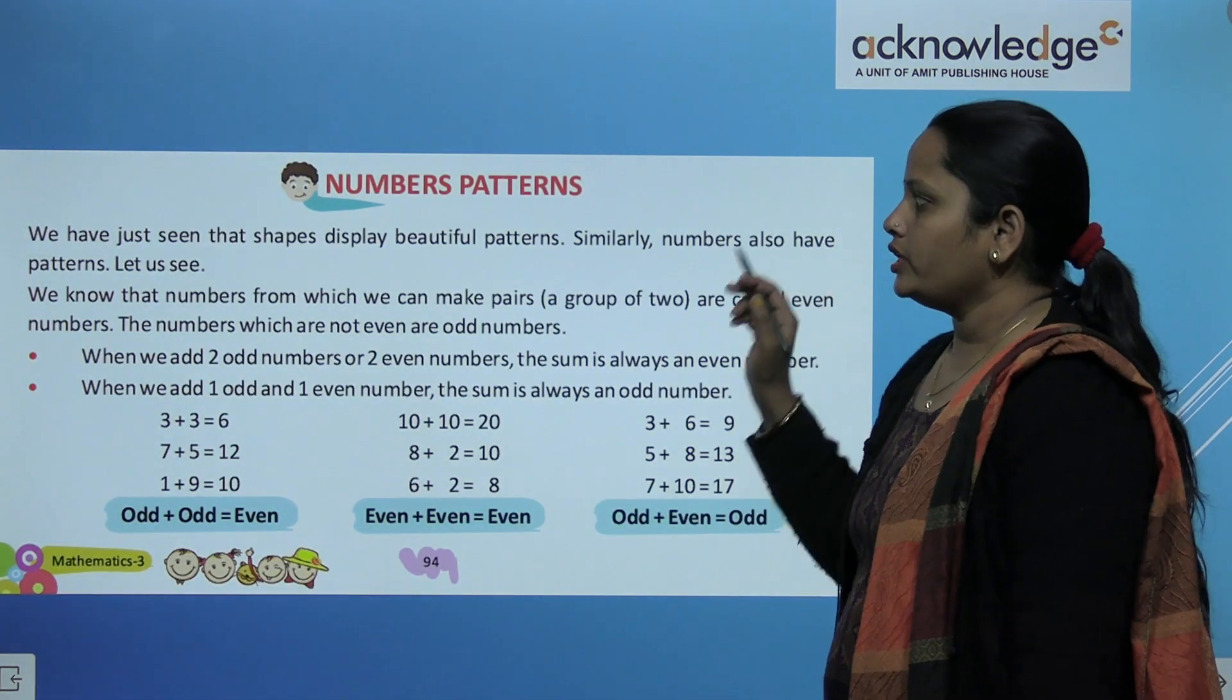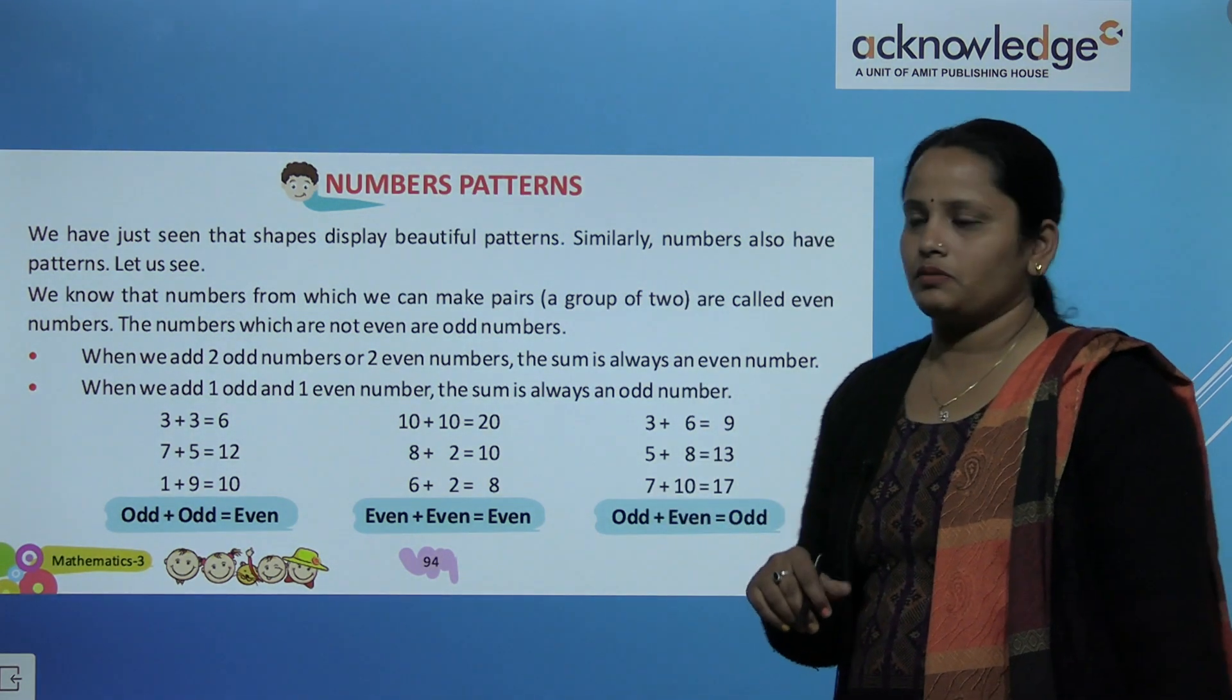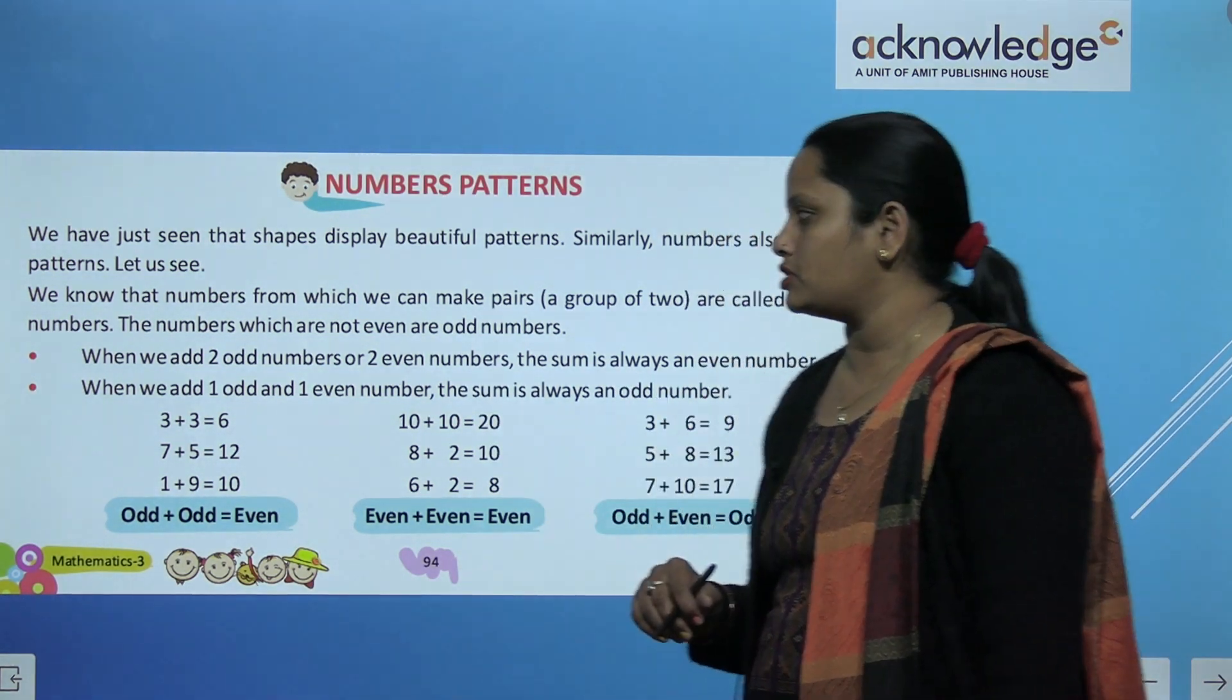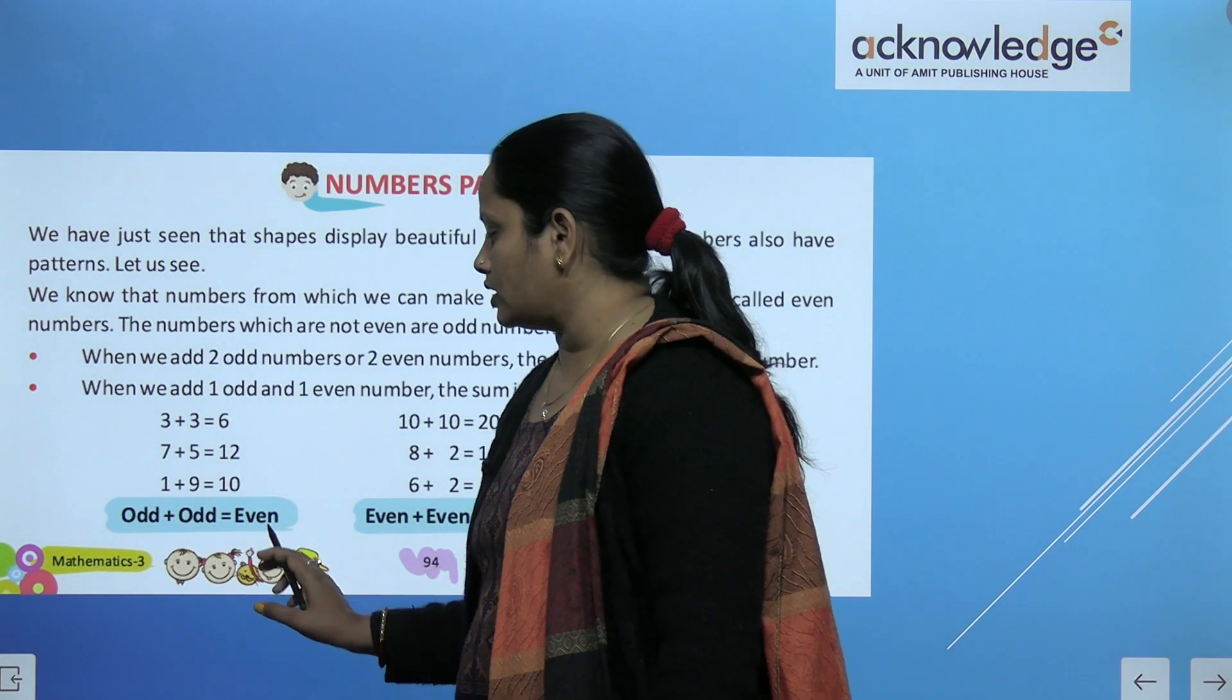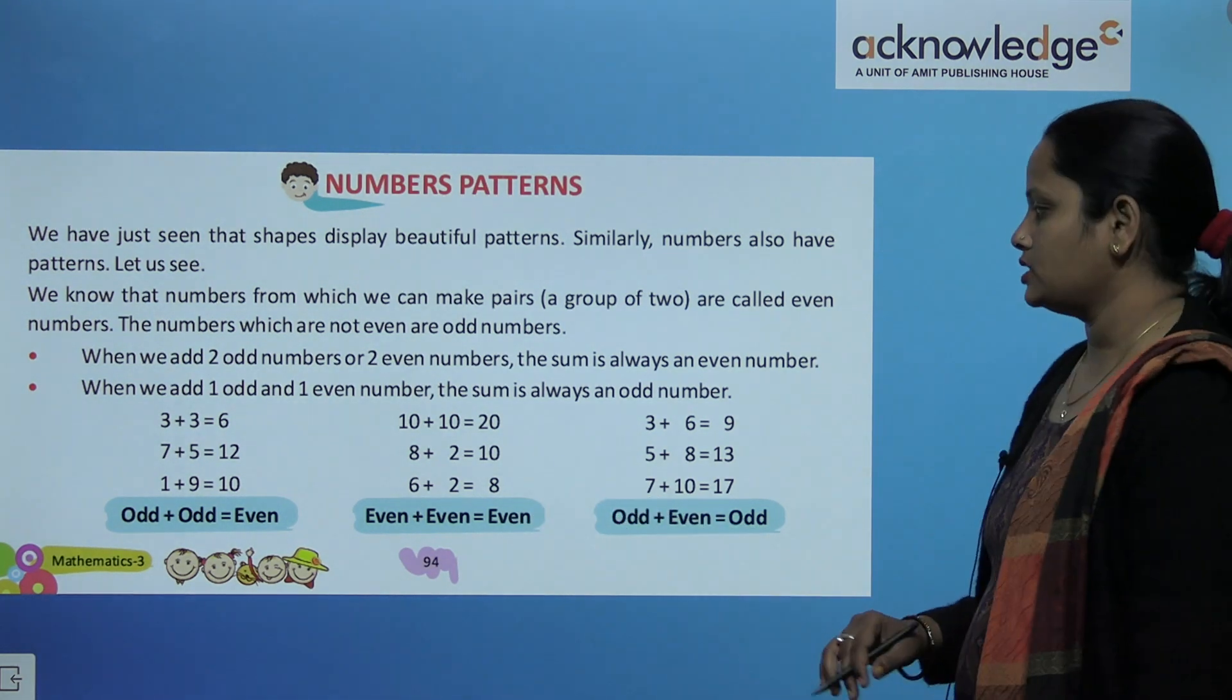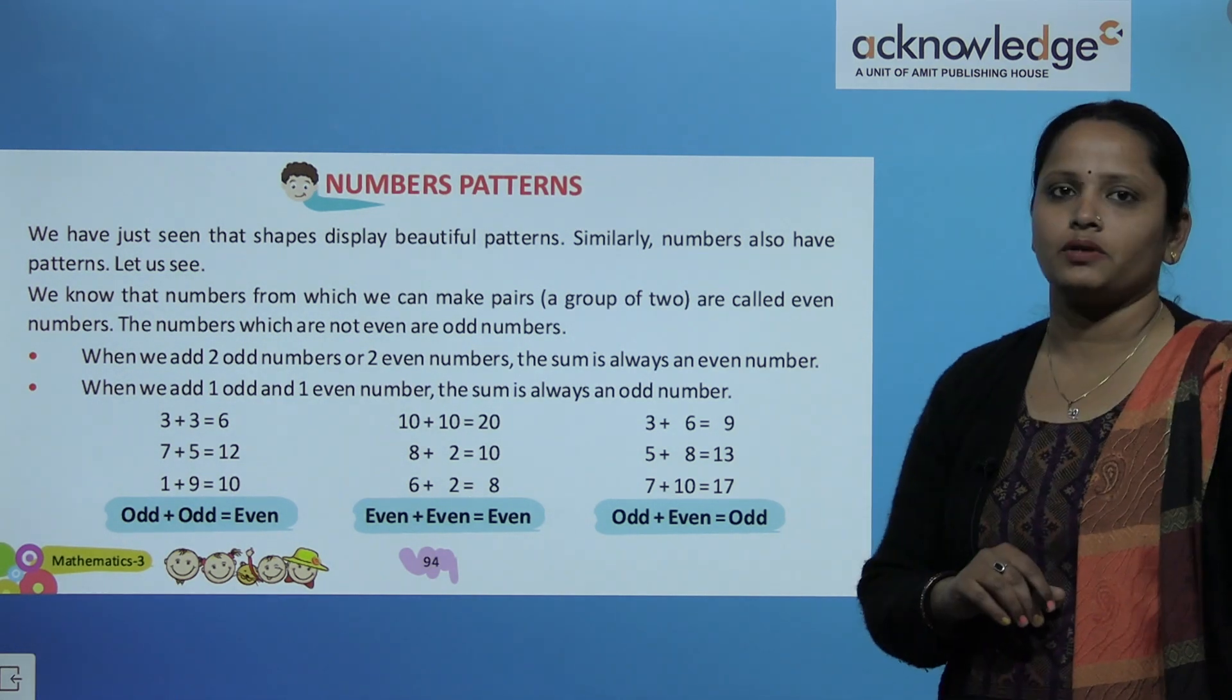Now what are number patterns? We just have seen that shapes display different beautiful patterns. Similarly numbers also have patterns. Let's see. Numbers from which we can make pair are called even numbers. Lekin jinke pair nahi bante, those are called odd numbers. So when we add two odd numbers, we get even number. The sum is always an even number. So jab hum two odd numbers ko add karte hain we get even. So 3 plus 3 is 6, 7 plus 5 is 12, and 1 plus 9 is 10. Jab hum do even numbers ko add karte hain we get an even number. 10 plus 10 is 20, 8 plus 2 is 10, and 6 plus 2 is 8. Jab hum ek odd or even number ko add karte hain we get odd number. 3 plus 6 is 9, 5 plus 8 is 13, and 7 plus 10 is 17.